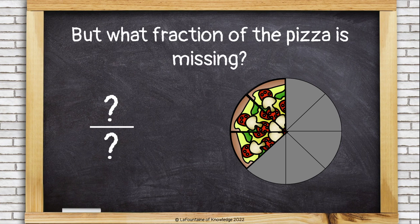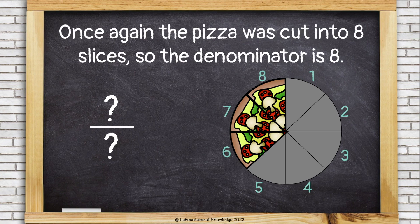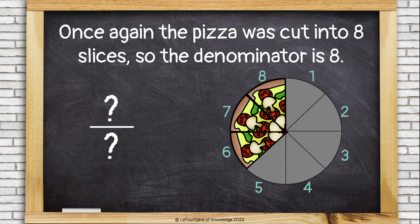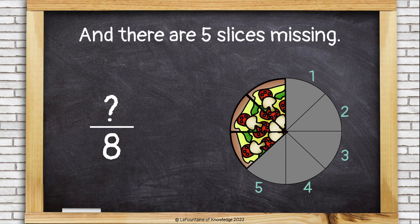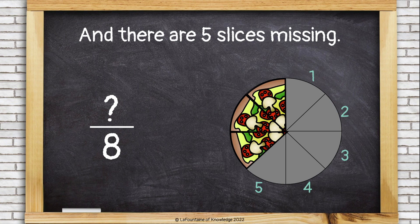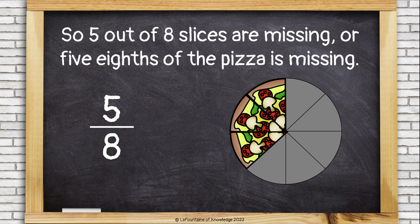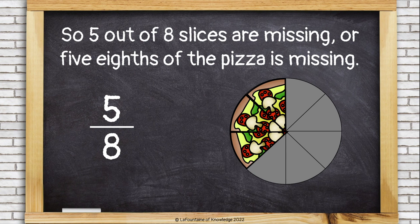But what fraction of the pizza is missing? Once again, the pizza was cut into eight slices, so the denominator is still eight. And there are five slices missing. This time I'm considering the number of slices that are missing, which is five, and that's my numerator. So I can say that five out of eight slices are missing, or five eighths of the pizza is missing.